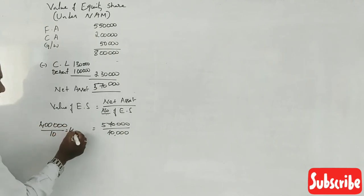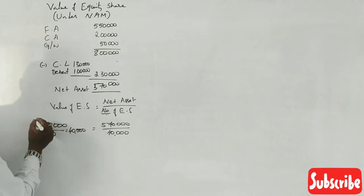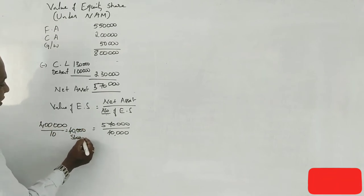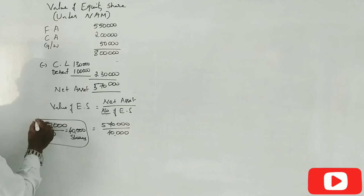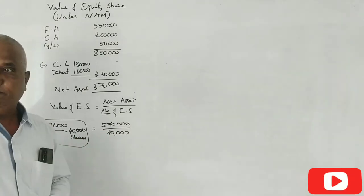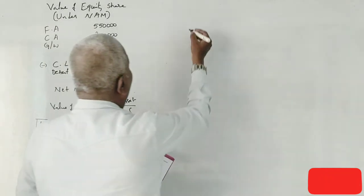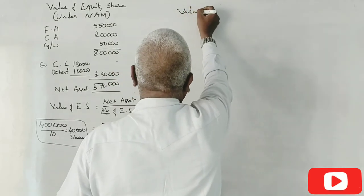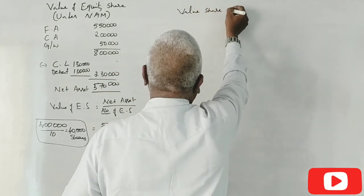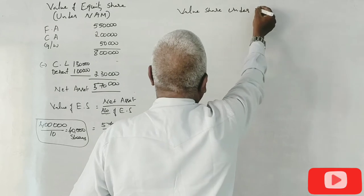4,00,000 equity share capital, which is 10 rupees per share, equals 40,000 shares. The value is 14.25 per share.